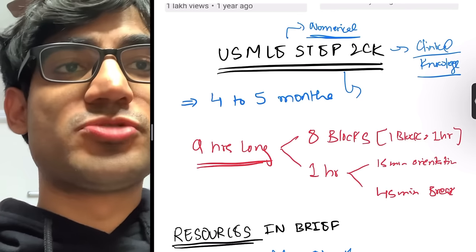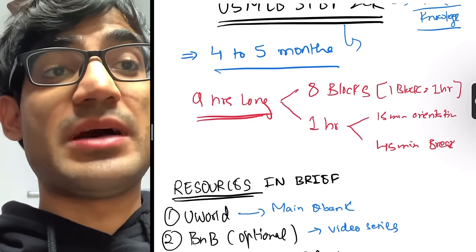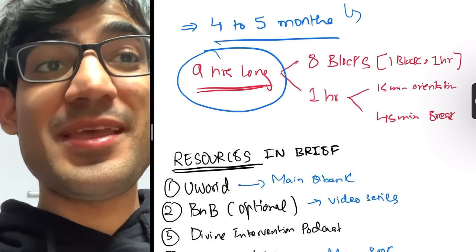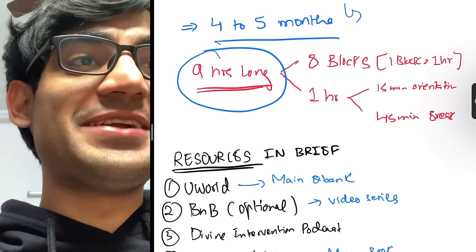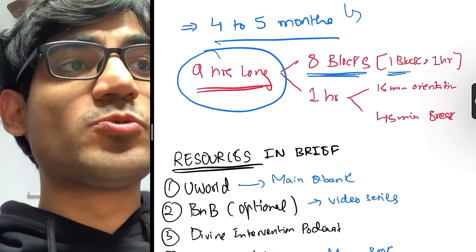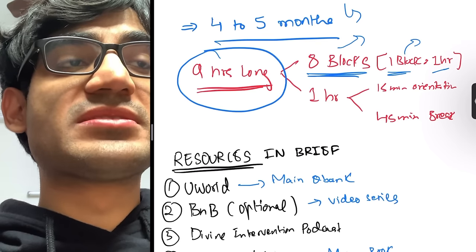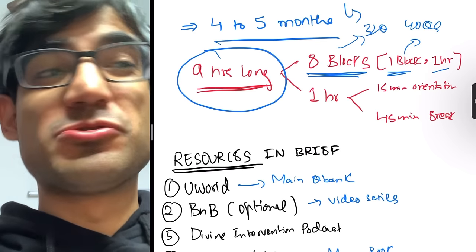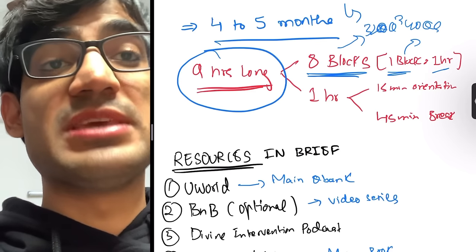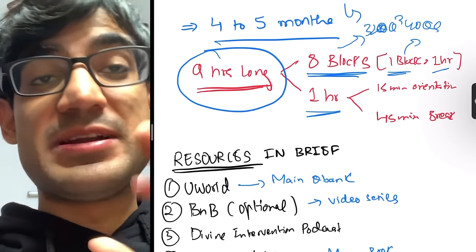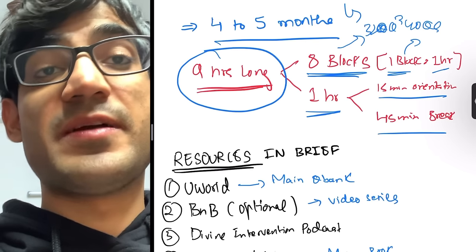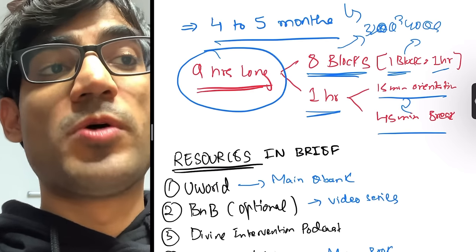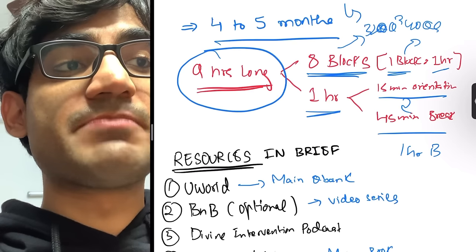Step 2 CK took about 4.5 months to prepare for. Like Step 1, there is a one-hour period split into a 15-minute orientation and 45-minute break. If you complete the orientation beforehand, you can convert it into break time for a full one-hour break. If you have a solid Step 1 foundation, Step 2 CK will not be that hard since it builds on Step 1 knowledge.